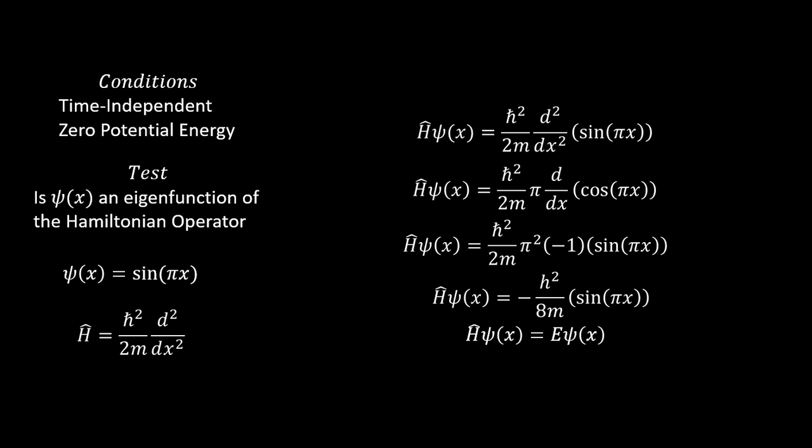we're taking our Hamiltonian of ψ. The first derivative of sin(πx) gives cos(πx) times π.